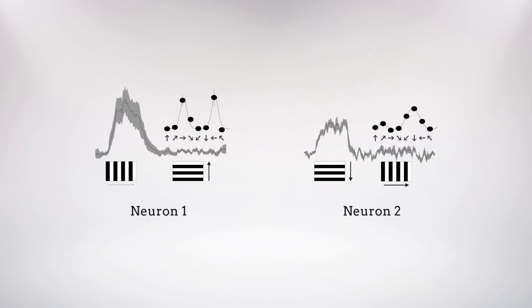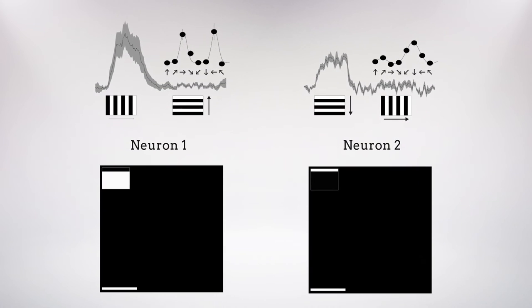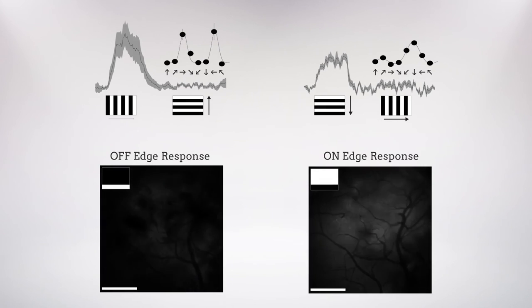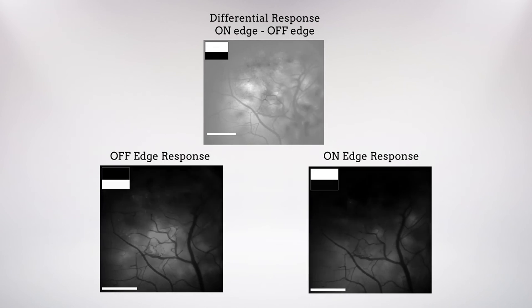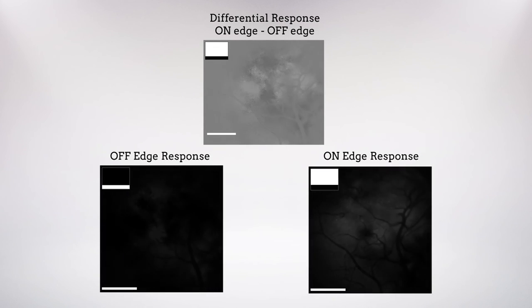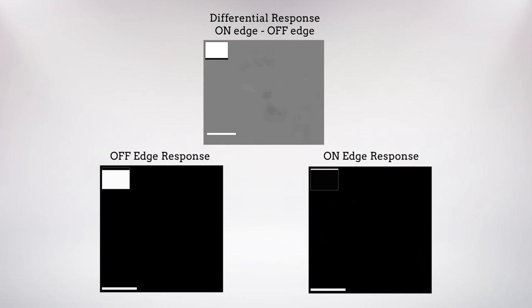Because neurons in the visual cortex are so strongly selective for the orientation of edges, which define objects and help us make sense of visual scenes, the researchers also used edges to explore the relationship between the encoding of orientation and the encoding of dark and bright. They found that the responses of superficial layer neurons depended strongly on both edge orientation and whether the edge was bright or dark, indicating that both properties are jointly encoded in the superficial layers.